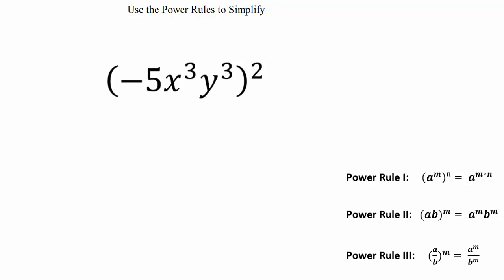Power rule 3 states that when we have a fraction being raised to an exponent, that exponent goes to both the numerator and the denominator.